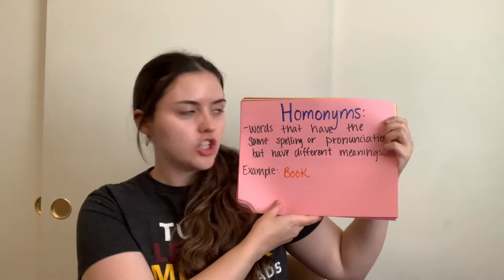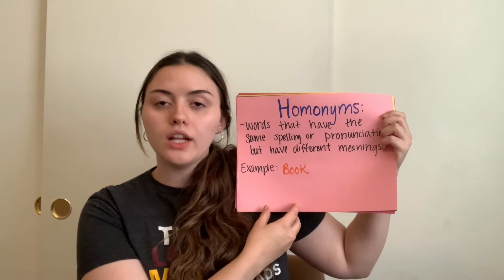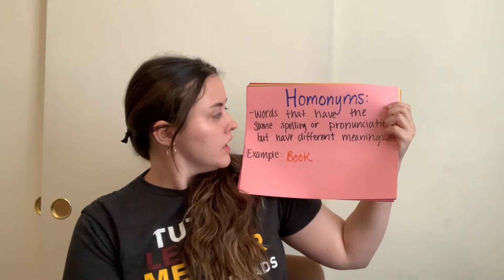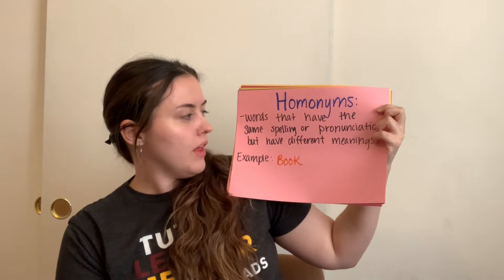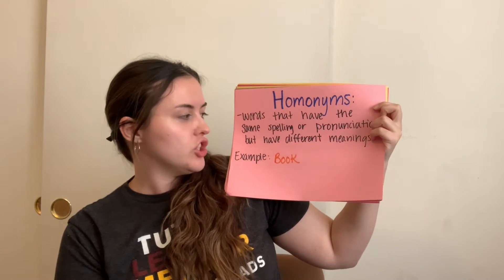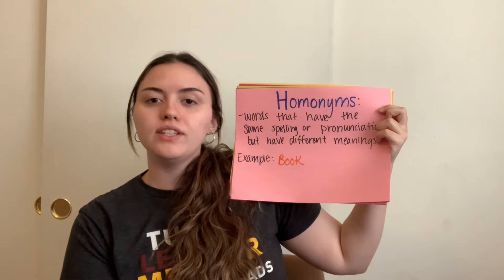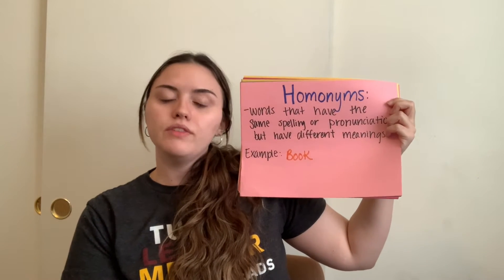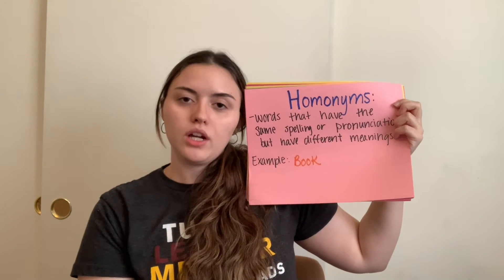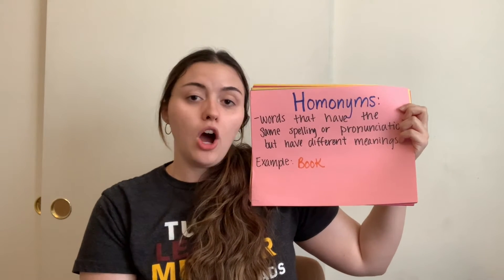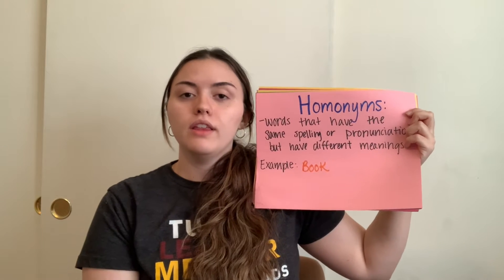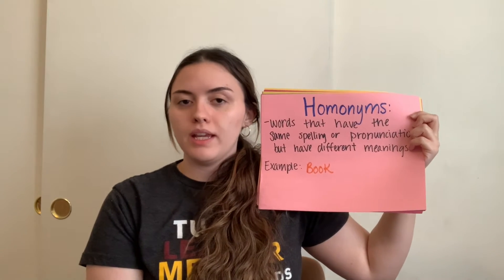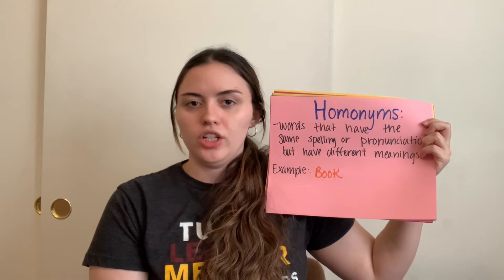Another word relationship is homonyms. These are words that have the same spelling or pronunciation but have different meanings. An example of this is book, which could be an object that you read or the action of making a reservation.